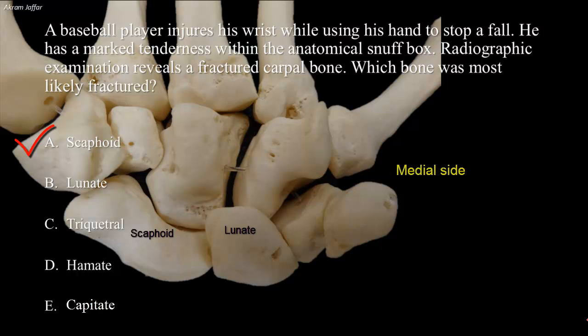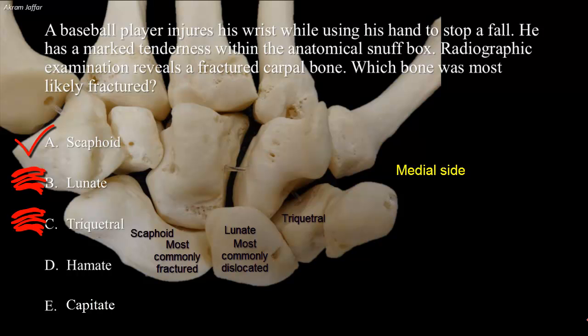The lunate bone is located next to the scaphoid on its medial side, and it is the carpal bone most commonly dislocated. The triquetral is more medial in position. The hamate is the most medial bone of the distal row, and as its name indicates, it has a little hook. The hook extends anteriorly and can be palpated on deep pressure over the medial side of the hand at the base of the hypothenar eminence — and is not laterally located as in the scenario. The hook can be injured, and this might result in injury of the nearby ulnar nerve.